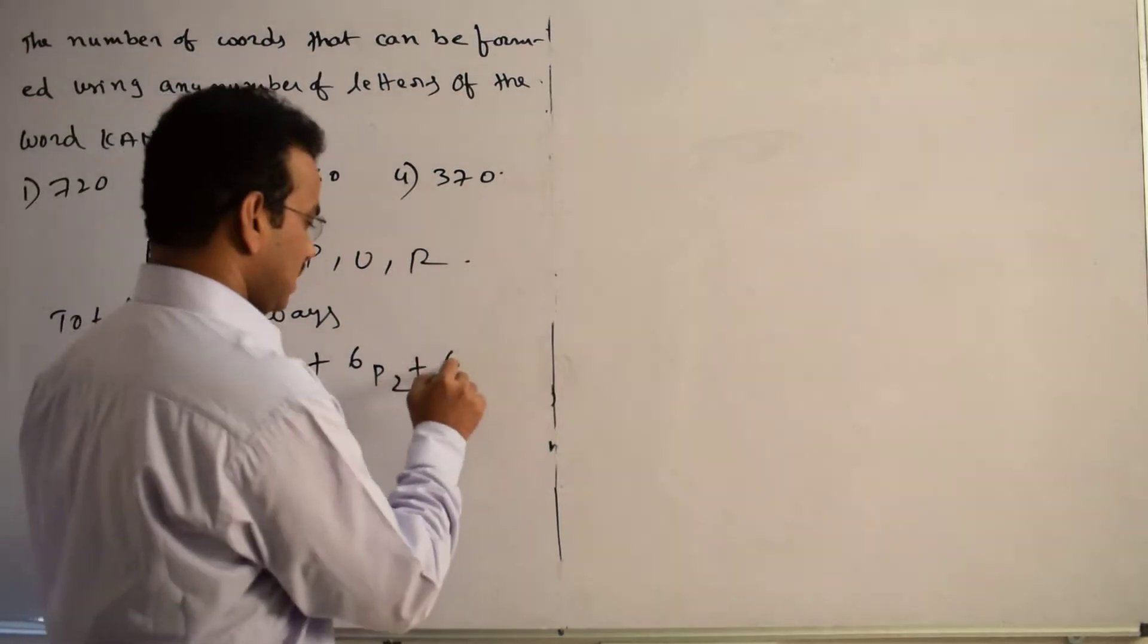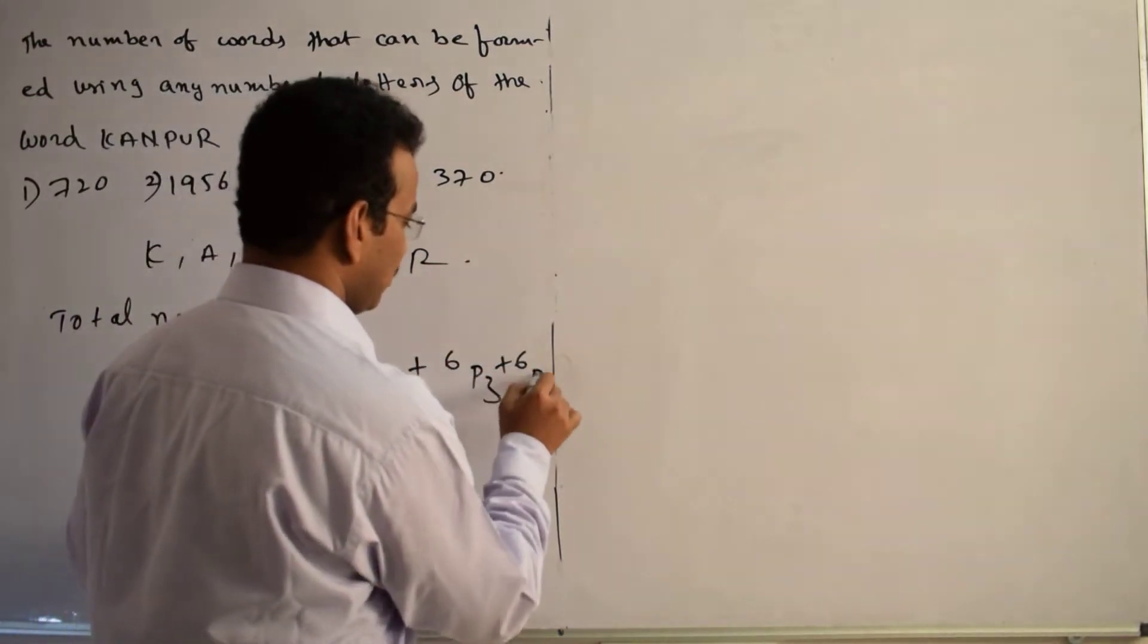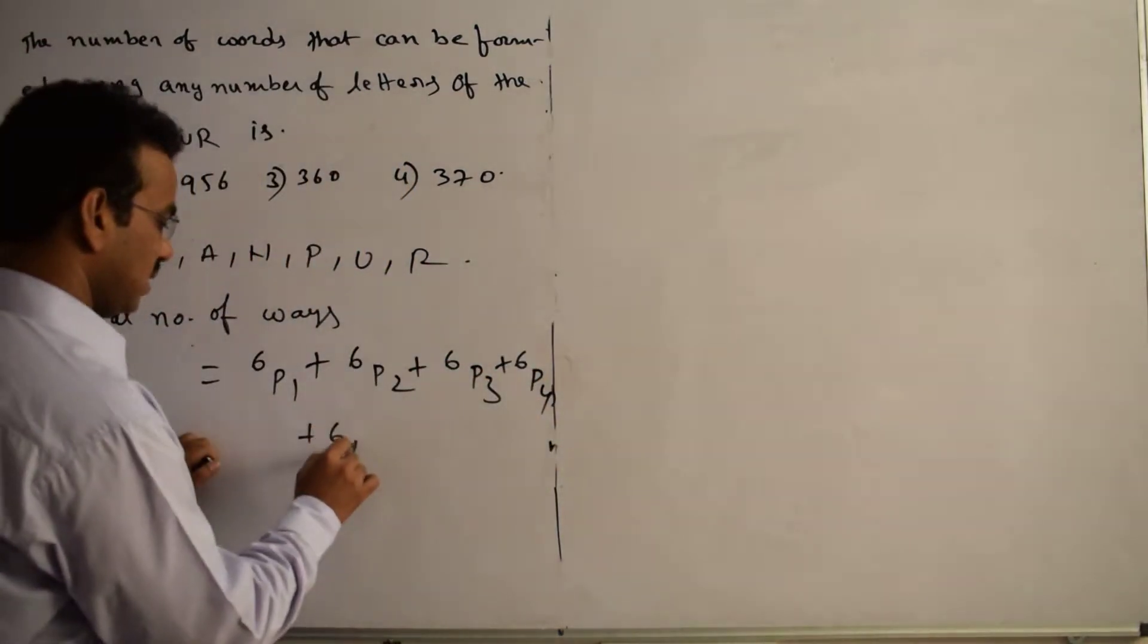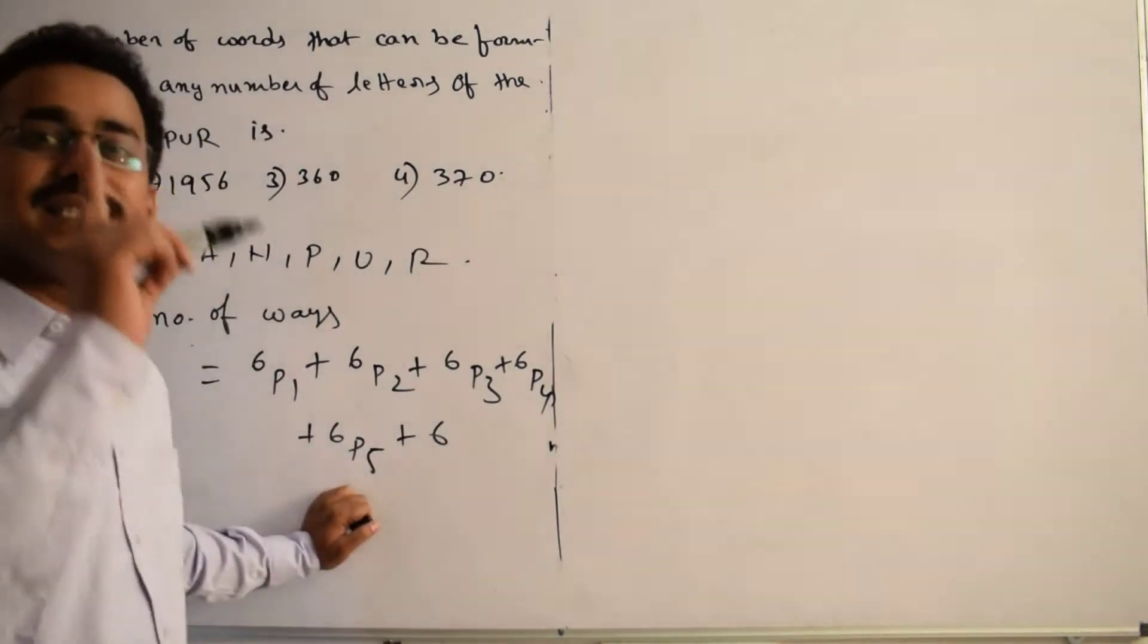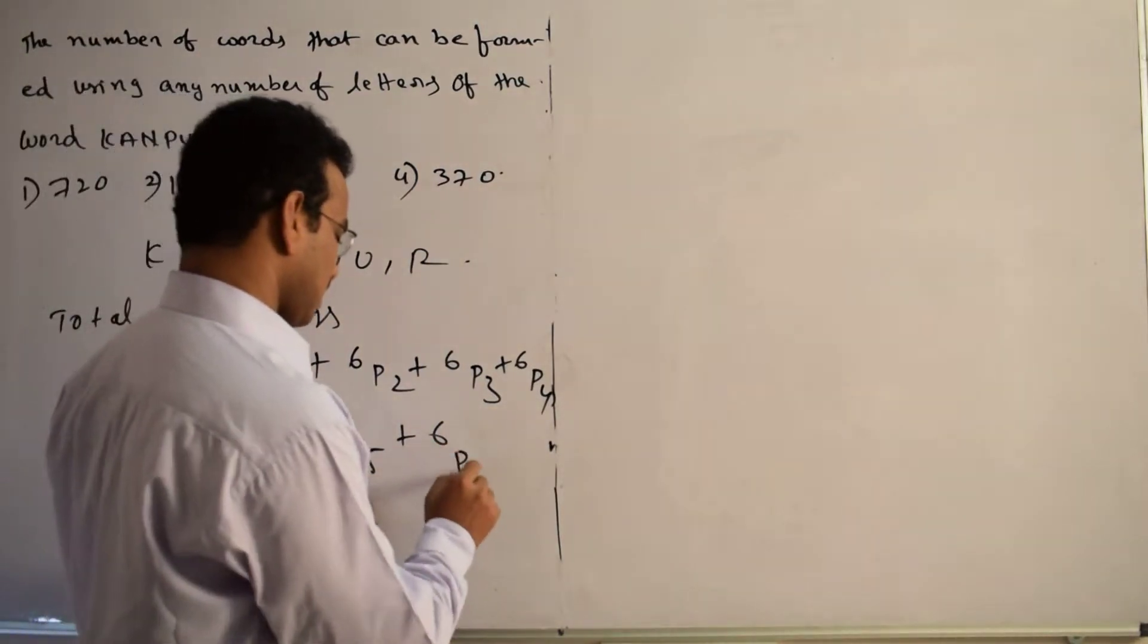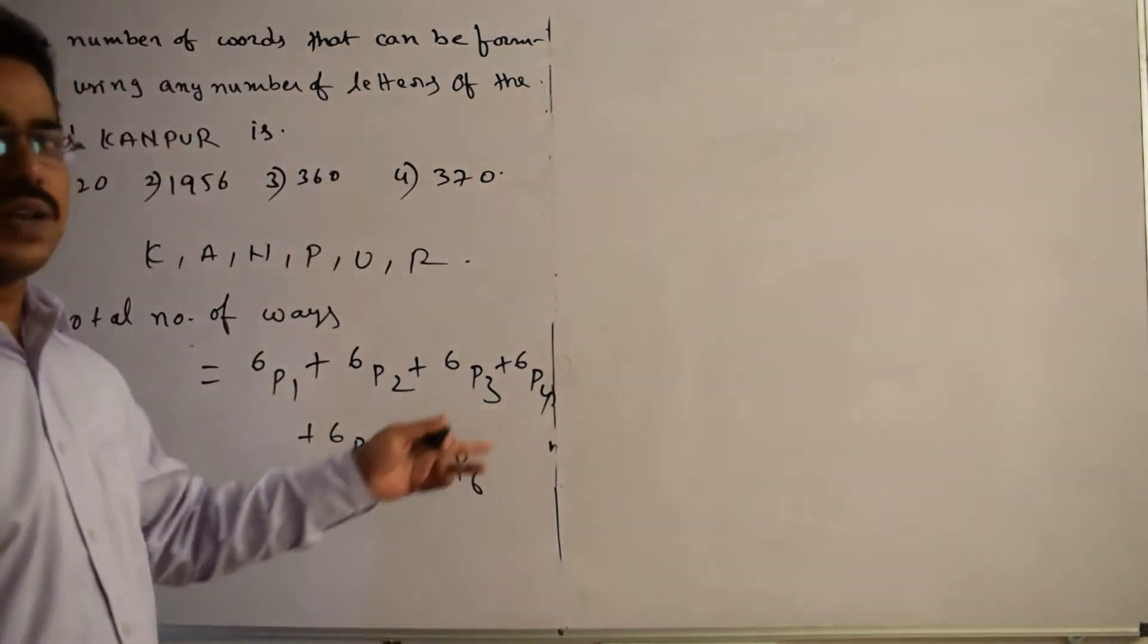Similarly like, 6P3, plus 6P4, plus 6P5, plus last, maximum number of letters are available to form a word, six letters. So 6P6. See, these are the required total number of ways.